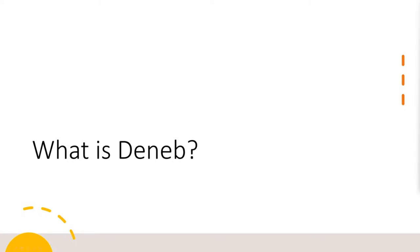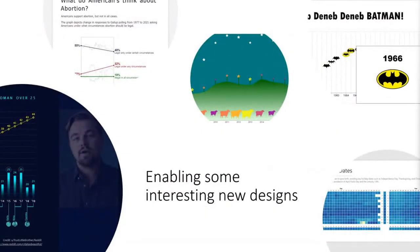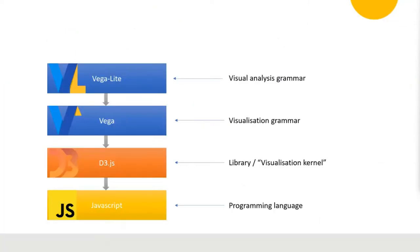So, what is Deneb? Deneb is built around Vega and Vega-Lite and it offers an immense amount of creative freedom and expressivity in data visuals, enabling us to create interesting new designs in Power BI that weren't possible previously. Vega is a declarative visualization grammar built on top of JavaScript using D3 libraries — D3 being a JavaScript library for manipulating documents based on data using things like HTML, SVG, and CSS.